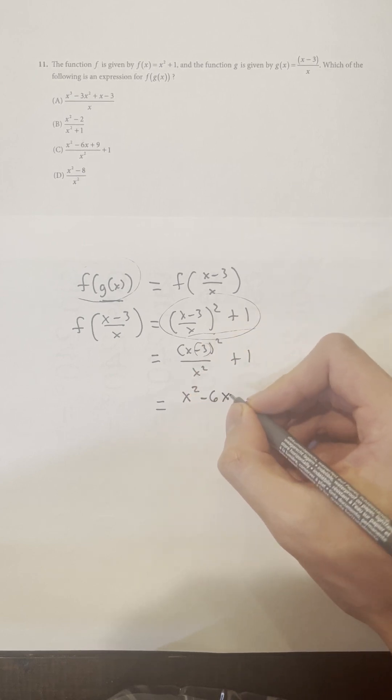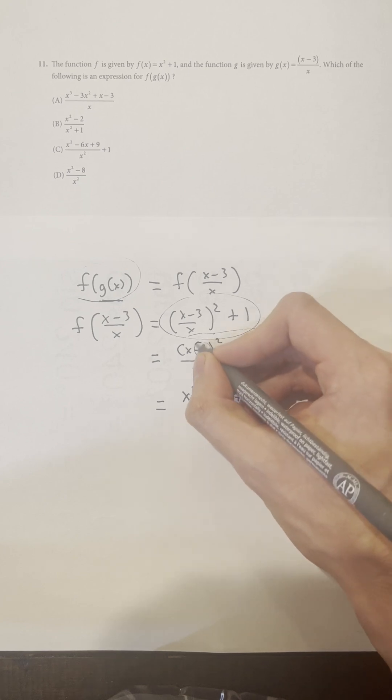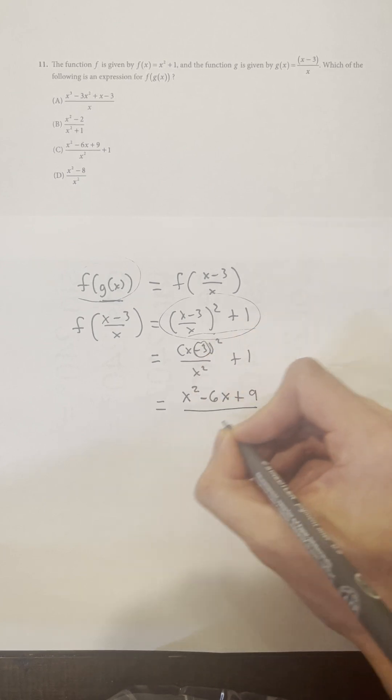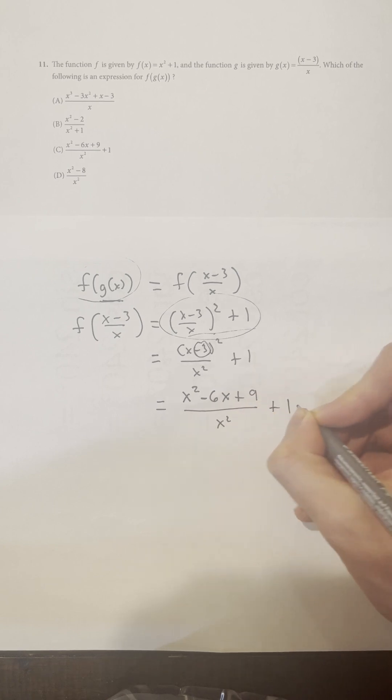Plus I square this, so negative 3 times negative 3, that's 9. Which answer choice is this? It's going to be C.